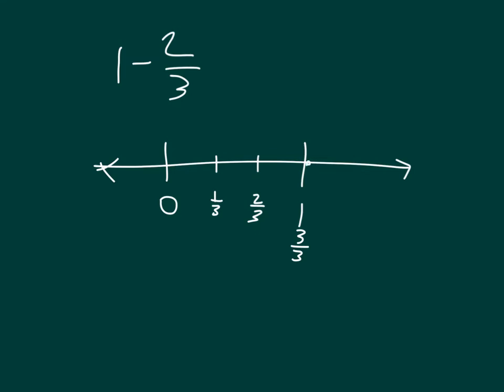Again, 1 is where we started, and we're subtracting 2 thirds. So minus 1 third, and minus 2 thirds, which puts us at 1 third. So, what we did again, is we took 1, we renamed it as 3 thirds, and then subtracting 2 thirds from that, we got 1 third.